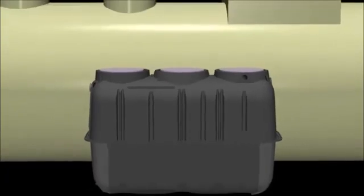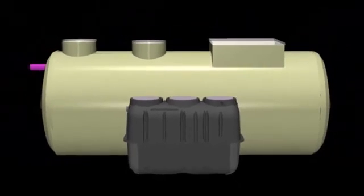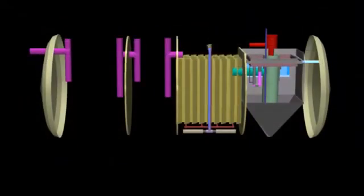There are two types of process with middle-scale Jokaso. One is the same process as adapted in small-scale Jokaso, the separation contact aeration process.